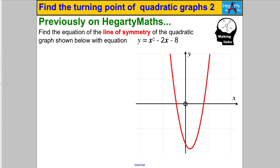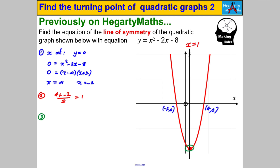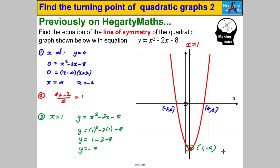Just to remind you of the method from the previous video — finding turning points by finding the roots, finding halfway between them, and substituting in that x value. I'm going to quickly go through it without talking since I've done this very example in the last video. Now I want to show you that completing the square will actually get you there potentially quicker.